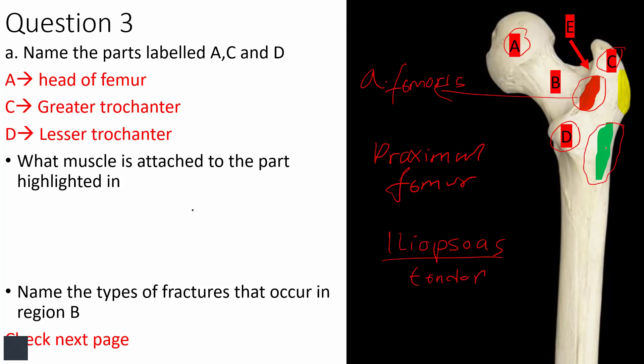The area highlighted in green is the gluteal tuberosity, where the deep quarter of gluteus maximus attaches. The other part of gluteus maximus attaches to the iliotibial band, which then attaches to Gerdy's tubercle on the outer aspect of the tibia. In yellow, the lateral surface of the greater trochanter is where gluteus medius attaches. Gluteus minimus attaches on the anterior surface of the greater trochanter.